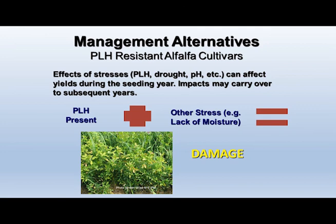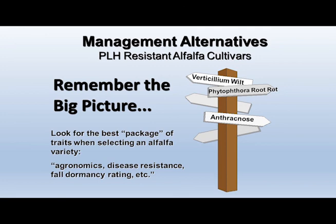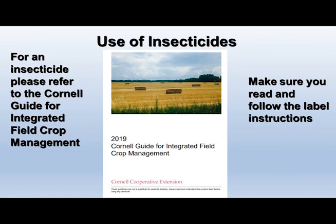Additional stresses such as drought can enhance potato leafhopper damage on alfalfa. When selecting a potato leafhopper resistant cultivar, first ensure it is highly resistant, then consider whether it is adapted for your area, whether it has resistance to certain diseases, and what the best overall package of traits is for you and your farm. If an insecticide is needed, consult your Cornell guide for integrated crop management, follow the label, and make sure the crop and pest are listed and it is registered in New York.